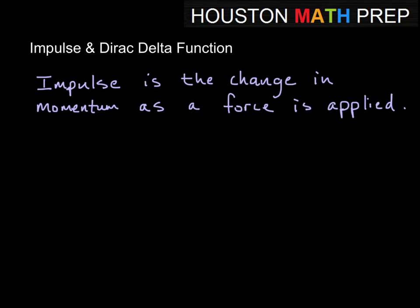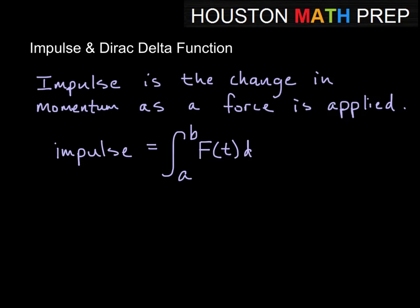We're talking about the idea of impulse and the Dirac delta function and how they're related. Impulse is just the change in momentum as we apply a force to a mass. We can think of another way to write the impulse: it's really the area under the curve from time A to time B — the integral of F(T) dT. So impulse is basically the area under the force curve between A and B.